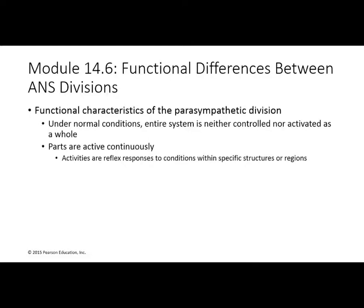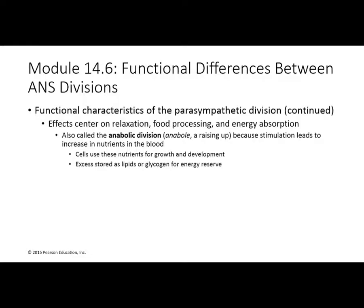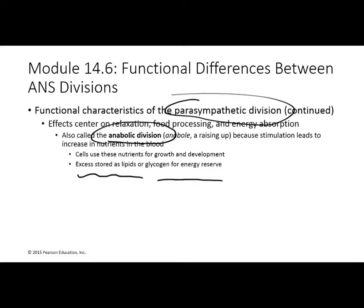Under normal conditions, neither system is completely activated — they're both continuously working like a rheostat, slowly up and down, back and forth. During parasympathetic moments, it is more anabolic: building up energy reserves, storing extra lipids or glycogen. During parasympathetic activation, pupils are more restricted (cranial nerve 3), digestive secretions and salivary glands are increased (cranial nerves 7 and 9), more hormones are released to increase absorption of nutrients, and blood flow to the genitals increases for sexual arousal.